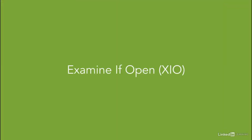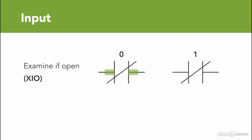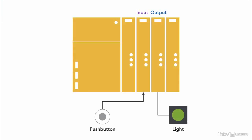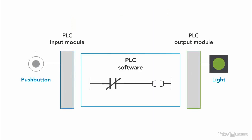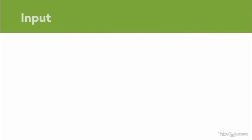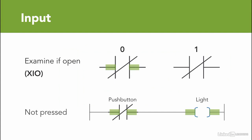Now let's use the Examine If Open instruction. XIO instruction acts the opposite way — it is activated when the logic state is 0, and not activated when the logic state is 1. Taking the same example with the same push button and light connection, but only changing the PLC ladder logic program to use XIO instruction: when the push button is not pressed, the logic state is 0, and since we are using XIO instruction, it's activated and the light will be on.